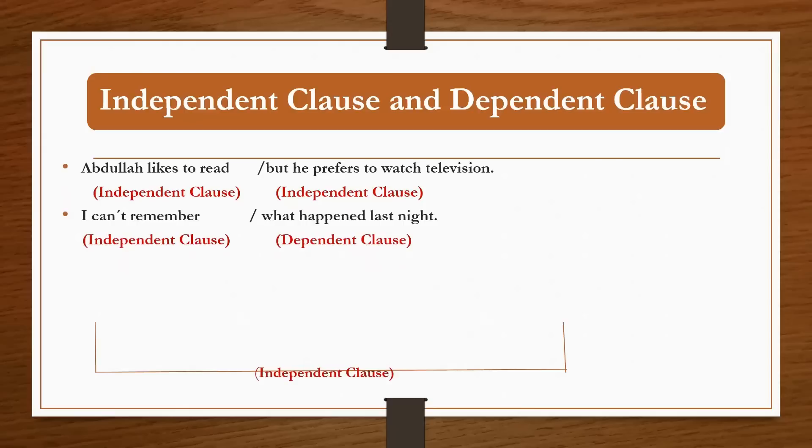Another example: I can't remember what happened last night. 'I can't remember' can be a complete sentence, so it's an independent clause. But 'what happened last night' cannot stand alone. You need something else for completion. So what is this clause? A dependent clause.